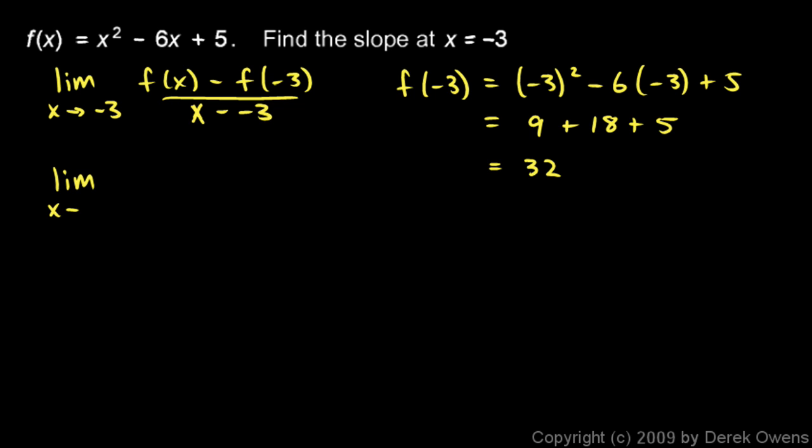So our problem then becomes the limit as x approaches negative 3 of f of x, which is this. So I'll write x squared minus 6x plus 5 minus f of negative 3, which is minus 32, over the denominator x plus 3.